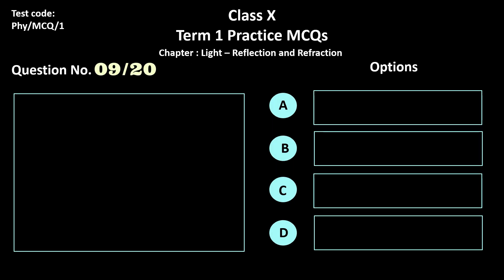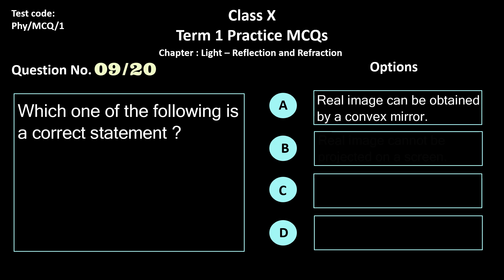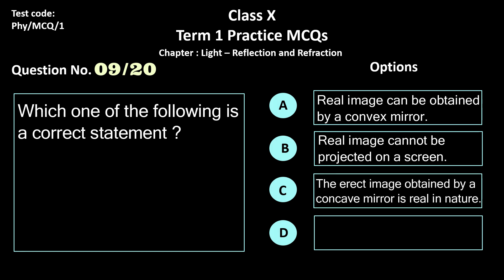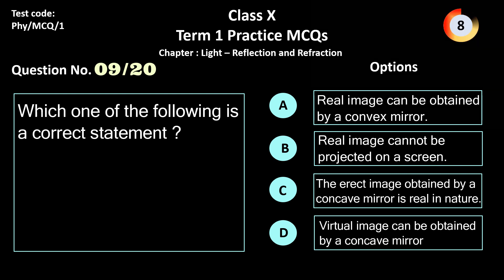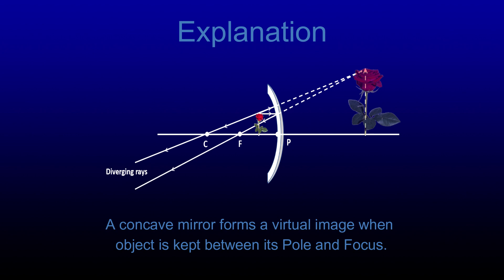Question 9. Which one of the following is a correct statement? Options: a) a real image can be obtained by a convex mirror, b) a real image cannot be projected on a screen, c) the erect image obtained by a concave mirror is real in nature, and d) a virtual image can be obtained by a concave mirror. The correct answer is option d. When an object is placed at a distance less than the focal length of a concave mirror, it forms a virtual and erect image behind the mirror.